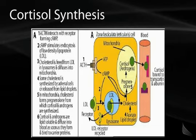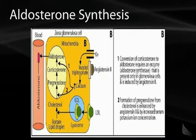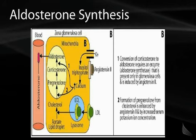Cortisol is released into the bloodstream. Likewise for aldosterone in the zona glomerulosa, it is also synthesized from cholesterol but the regulation is entirely different — it is regulated by both potassium and angiotensin 2. Angiotensin 2 binds to a G protein-coupled receptor with a Gq subunit, which activates IP3, which then activates the LDL receptor to take up cholesterol, and aldosterone is synthesized and released.